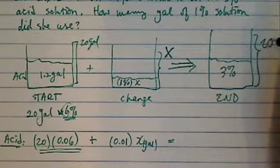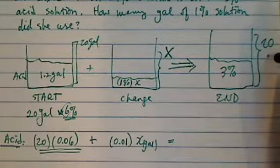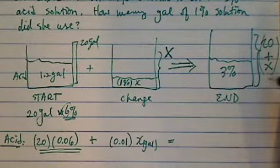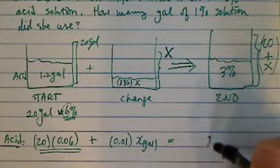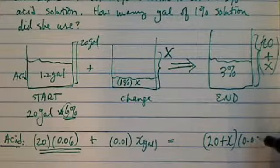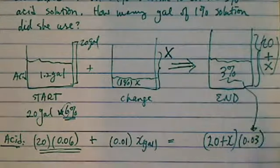Well, we had 20 to begin with, and then we added X gallons. So in order to calculate the acid in here, you actually have to do 20 plus X before you can multiply 0.03. That's the 3%. Now from here we have a complete equation with only one variable. It's pretty easy to solve.